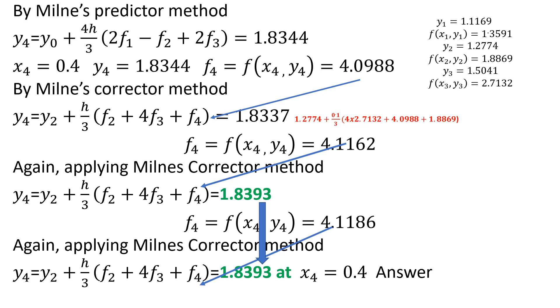In brief, we predicted the value of y4 and then corrected it again and again until it became constant. That is the Milne's Predictor-Corrector method. I used the RK4 method here, but you can also apply Euler's method — it is up to you.